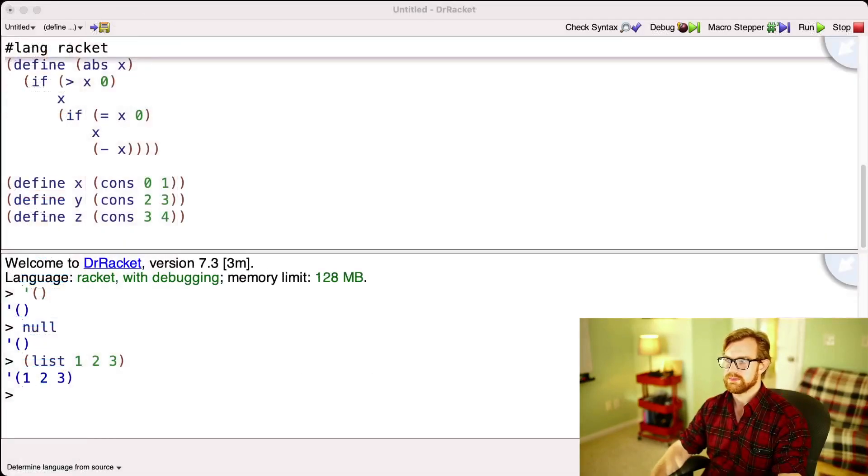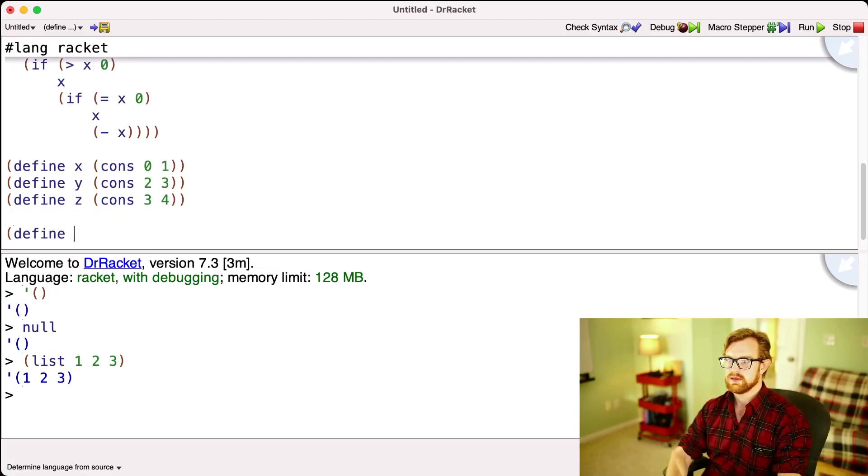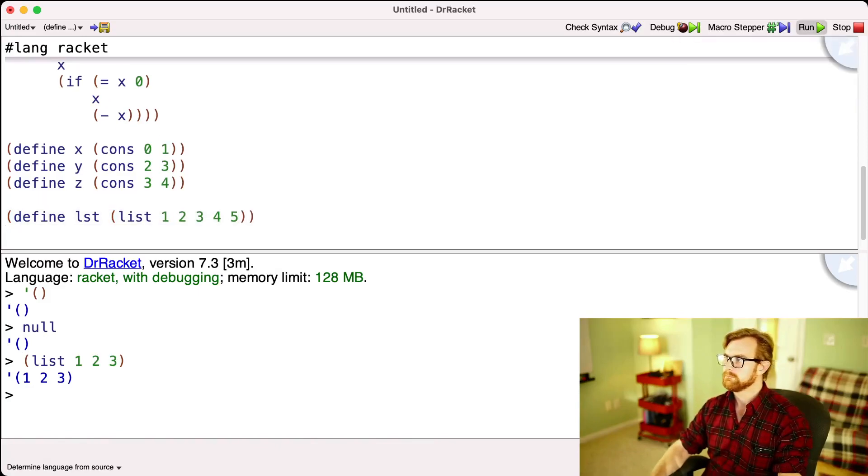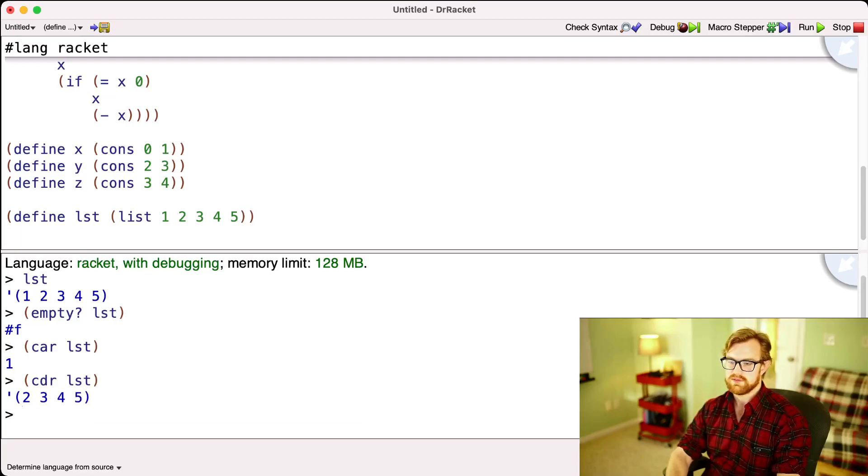Alright, so let's look at some examples of basic lists in Racket. Let's define LST to be list 1 2 3 4 5. Now I can print out LST and I can check, is LST empty? Well, it's not. There's some elements in it. So then I can do car LST and I get one, or I can do cdr of LST and I get 2 3 4 5.